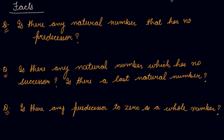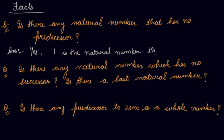Now, some facts. In this, we are actually covering your mental math questions. So, the first question is: is there any natural number that has no predecessor? The natural number starts from 1. Is there any natural number that has no predecessor? Yes — 1 is the natural number that has no predecessor.